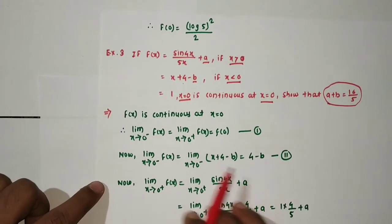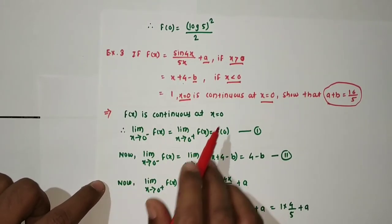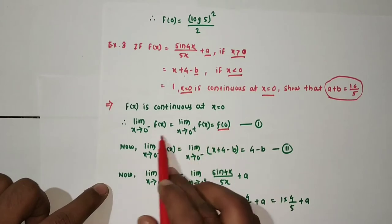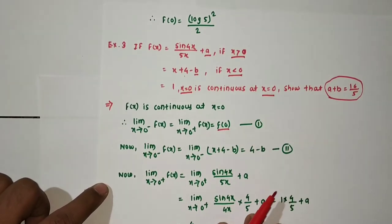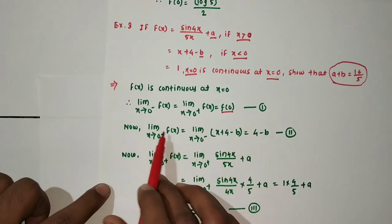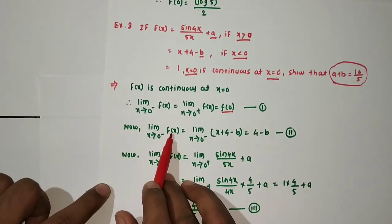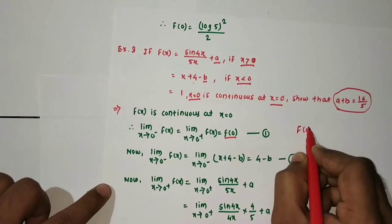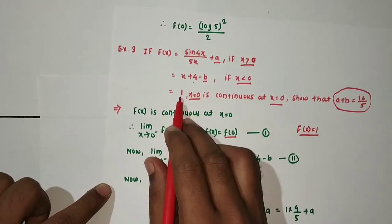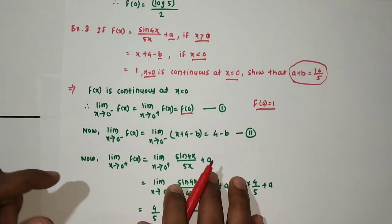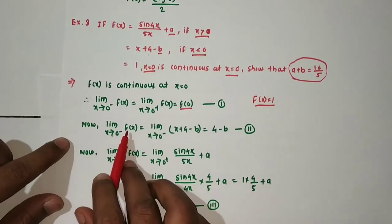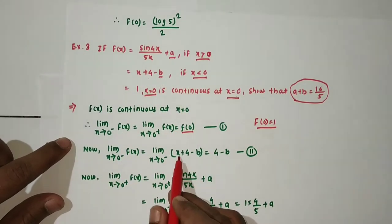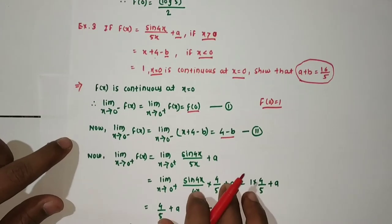Since f(x) is continuous at x = 0, we use the property: left hand limit = right hand limit = functional value. We know f(0) = 1 when x = 0. For the left hand limit we use the function x + 4 - b. Putting x = 0: left hand limit = 4 - b. Call this equation 2.